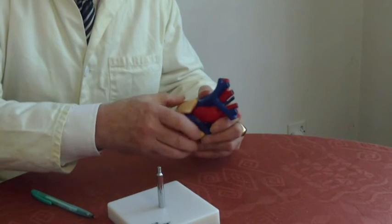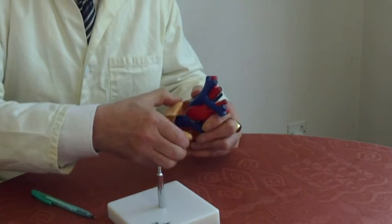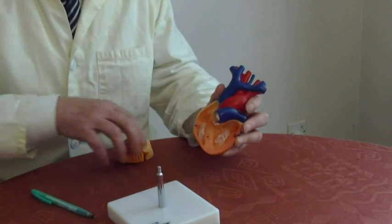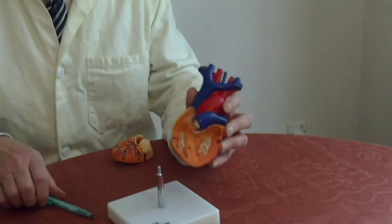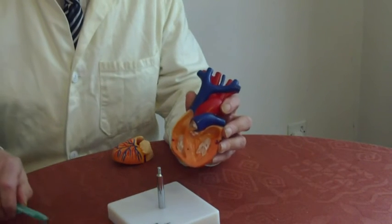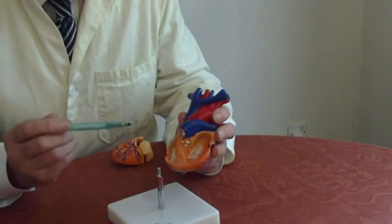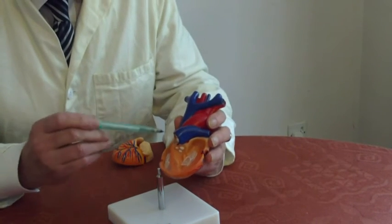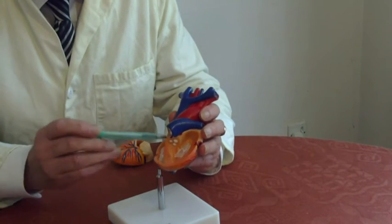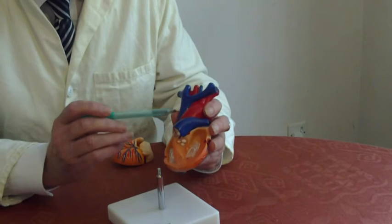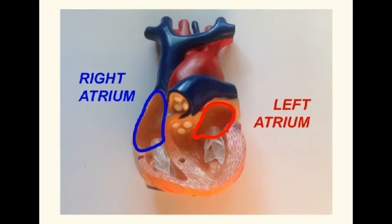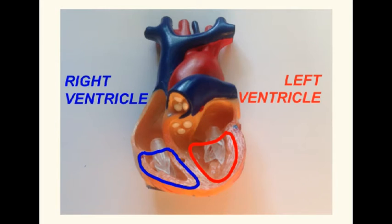Let's have a look inside the heart. There are four chambers in the heart: two atria, where the blood enters, and two ventricles, where the blood leaves.